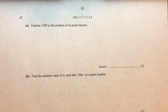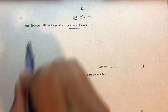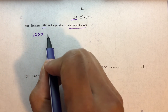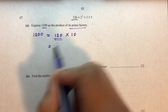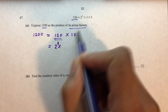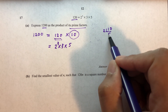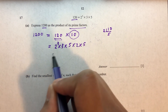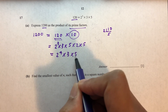Question number 17. We have 120 equal to 2 to the power 3 times 3 times 5. Part A: express 1200 as a product of its prime factors. 1200 equals 120 times 10. We know 120 is 2³ × 3 × 5, and the prime factors of 10 are 2 × 5. So 1200 equals 2 to the power 4 times 3 times 5 to the power 2.